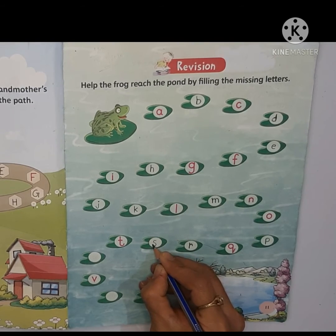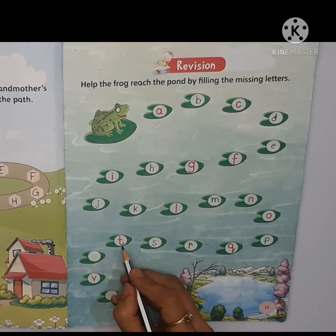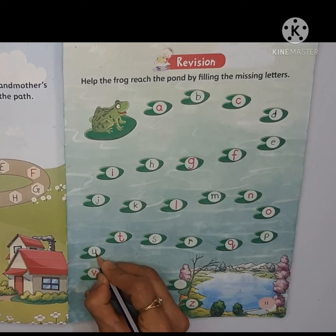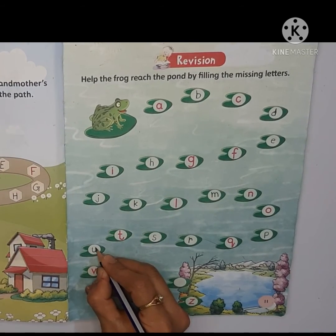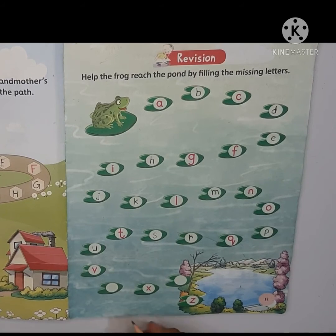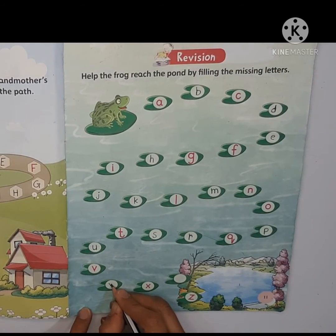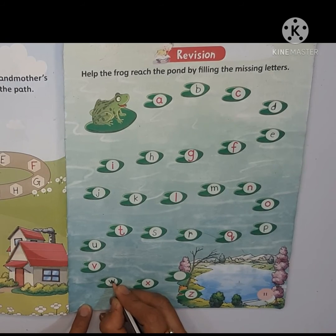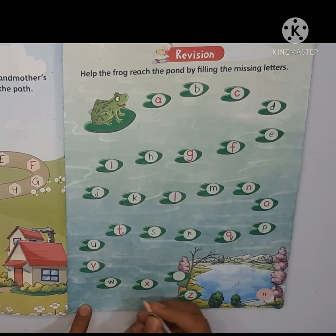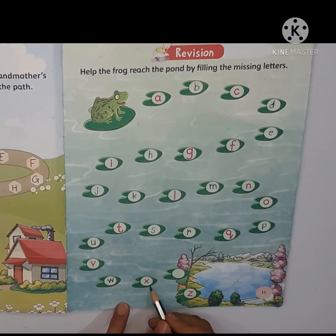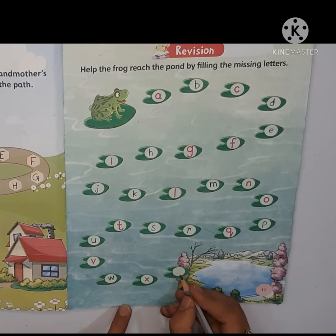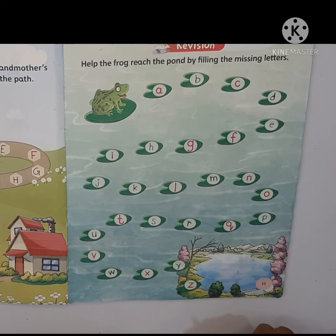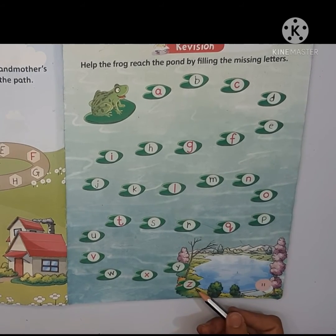S, s, t, t, u, u. A, v, w — upar tak leke jana aapne, dekhi slanting line ko — w, w. X, x, y, y, z, z.